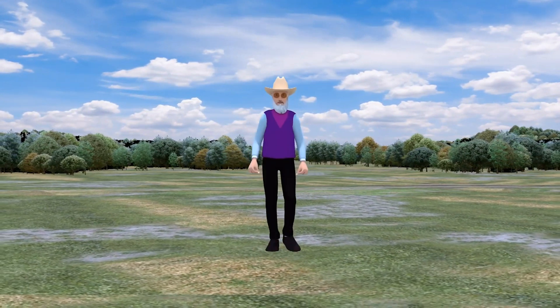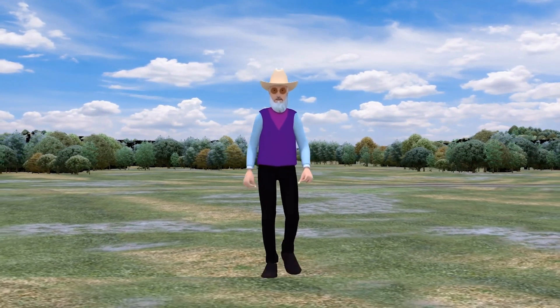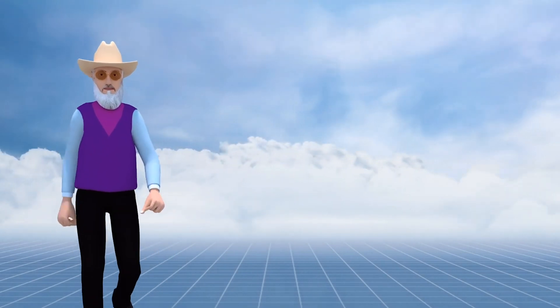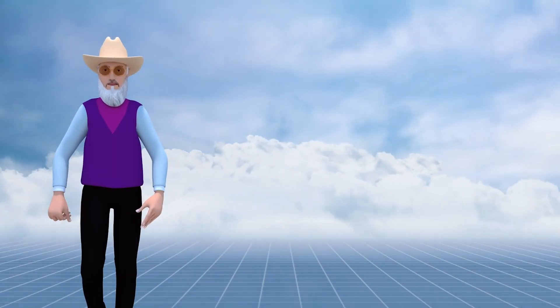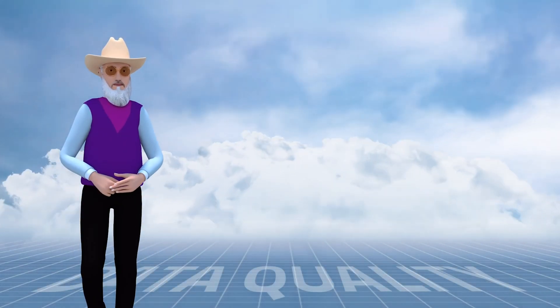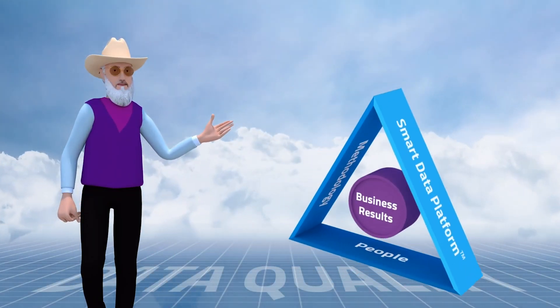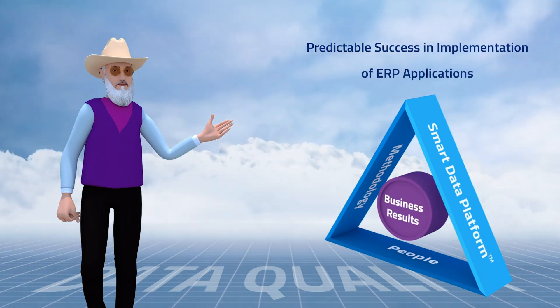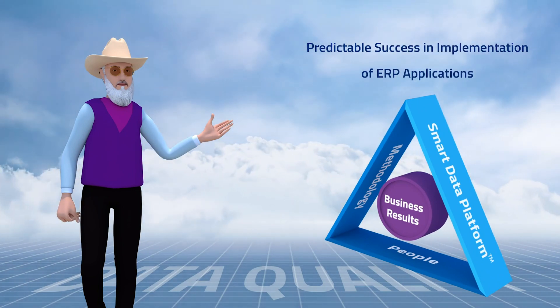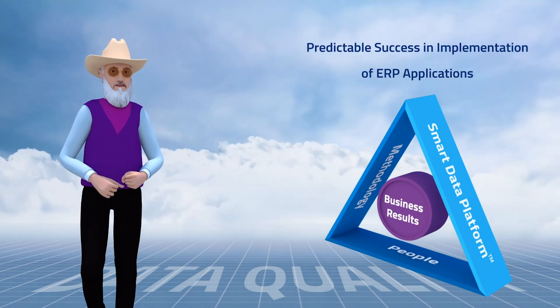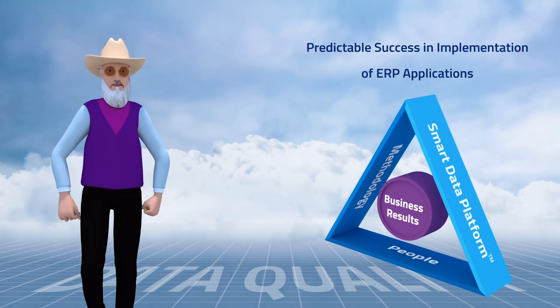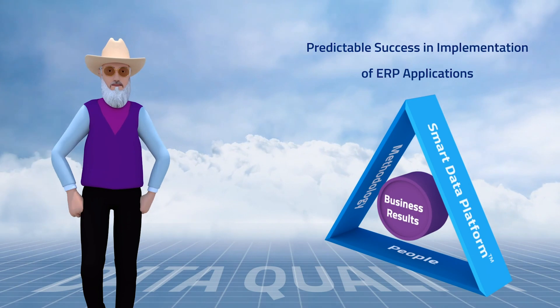Our suite has three major products that complete various functions. We offer predictable success and results in all of our engagements. It is made possible by three things: one, our unique approach; two, the ChainSys smart data platform; and three, our tenacious employees.